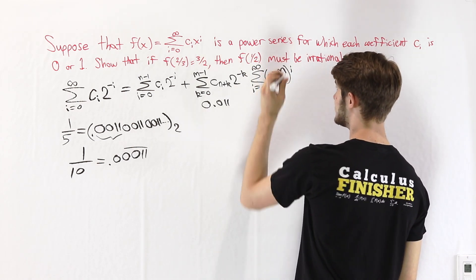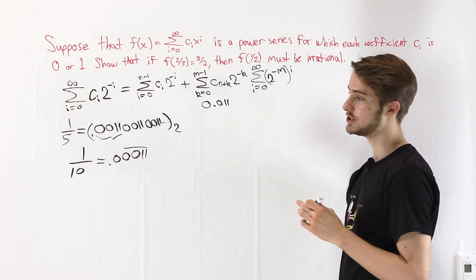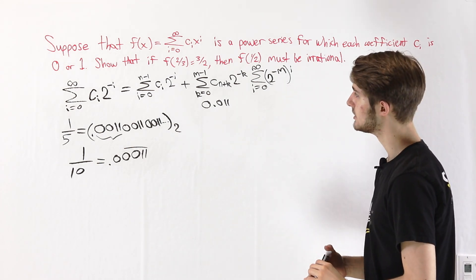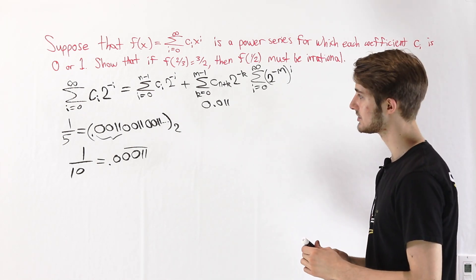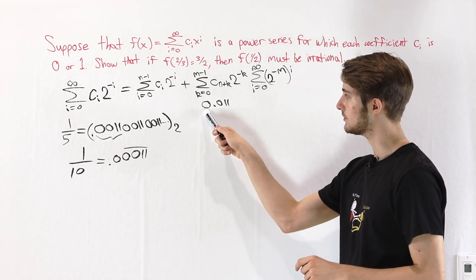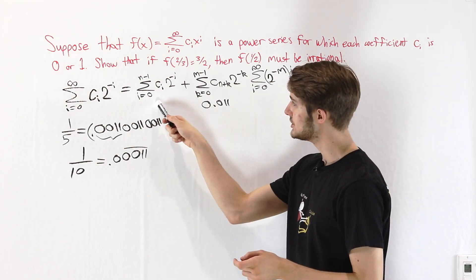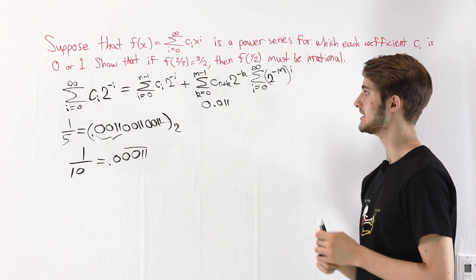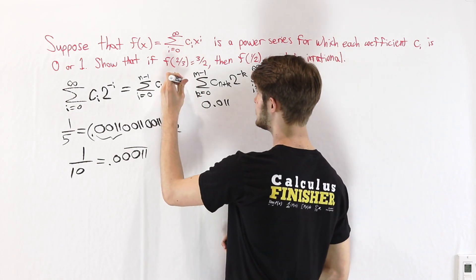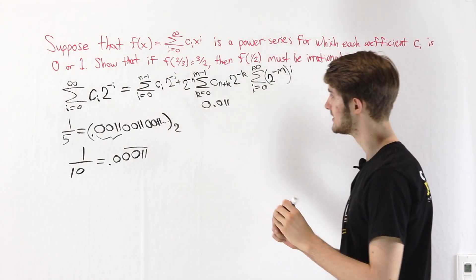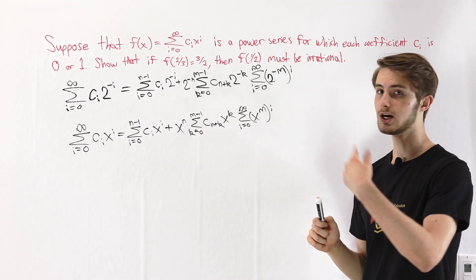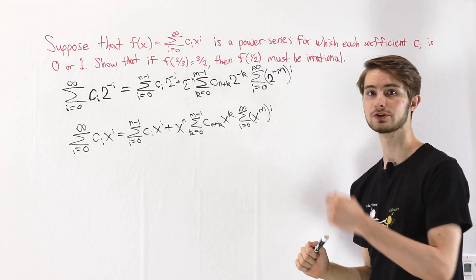There's one final thing we need to do: make sure our sum starts at the correct position in our expansion. Right now it starts in the ones place, but we have n digits before that which are not in our repeating sequence. So this sequence needs to be shifted n digits over, which is the same as multiplying by 2^(-n). This is what our binary expansion looks like assuming f(1/2) is rational for the contrapositive — a terminating part plus a repeating part represented by an infinite geometric series.